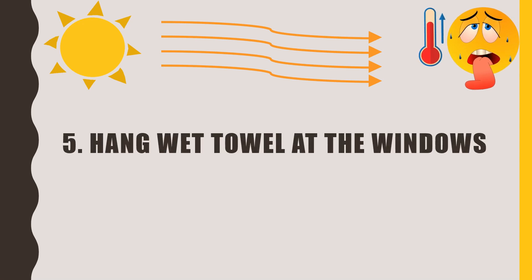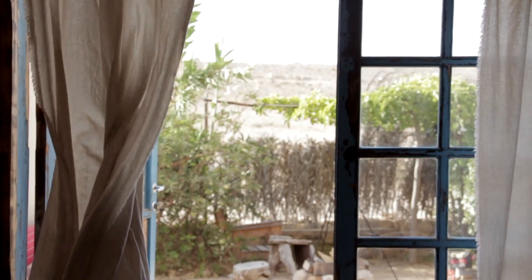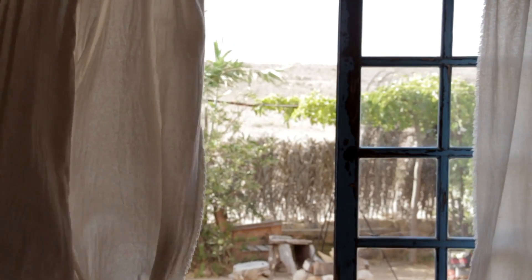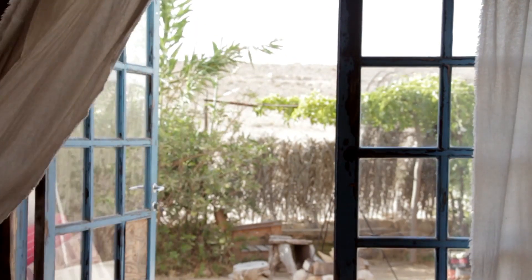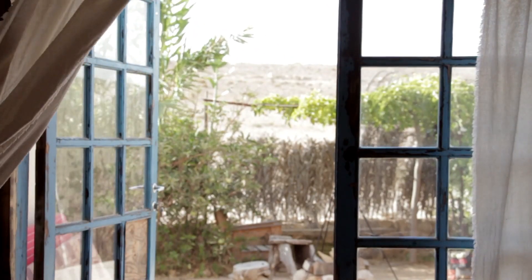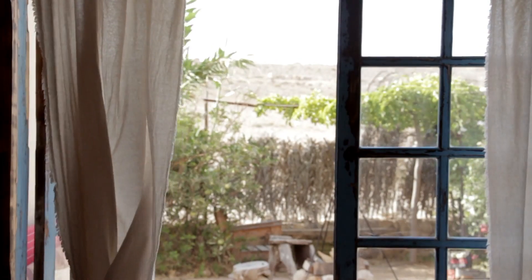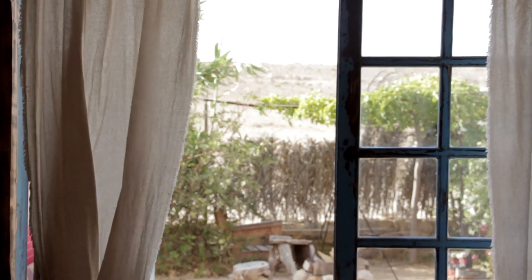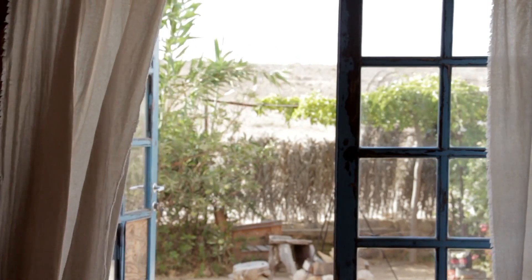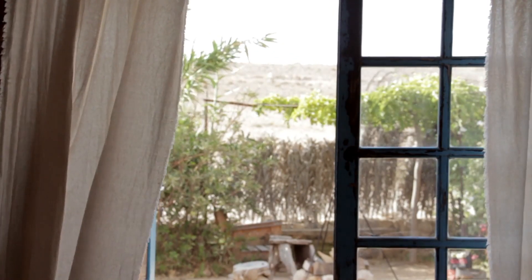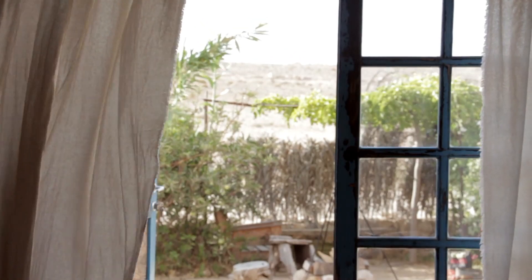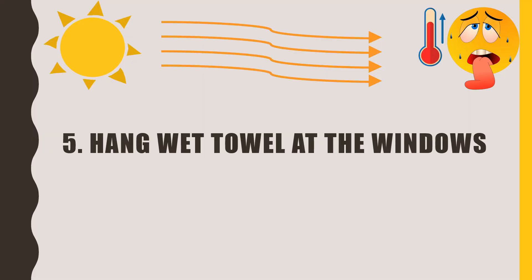Tip number five is to hang a wet towel at the windows. From inside your house, hang a wet towel across the windows so that air circulating through will carry moisture and lower your room temperature. However, be careful — hanging a wet towel for too long might make you feel uncomfortable due to excessive moisture inside your house.